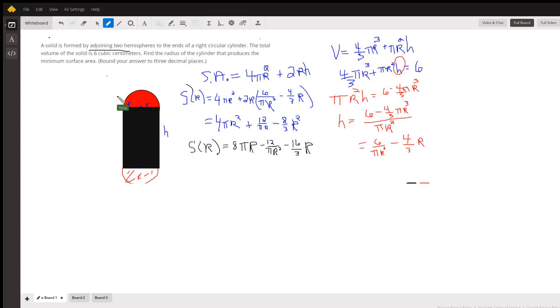Here's a cross-section of the solid that's been created. Here's one of the hemispheres on the top part of the cylinder, here's one down here. So really we have a full sphere and then we have this right circular cylinder in the middle.